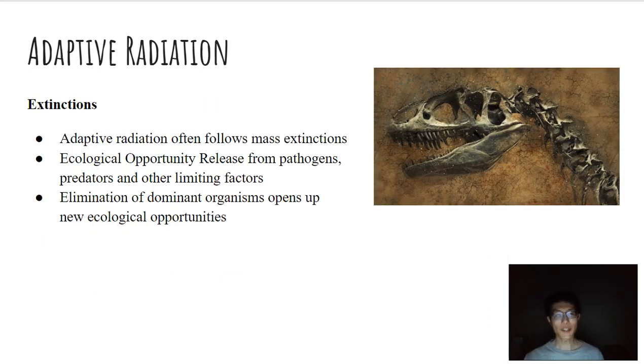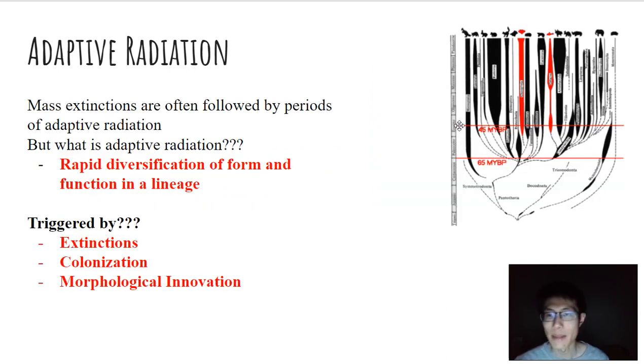So the first one is extinction. This should make a lot of sense, but extinctions can actually drive adaptive radiation because of an ecological opportunity release from pathogens, as well as predators and other limiting factors. We think back to that 65 million years ago, we had the KT extinction, which knocked out most of the dinosaurs.